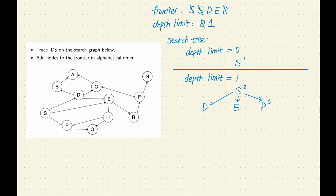The most recent node added to the frontier was E, so E is the fourth node expanded. Remove E from the frontier. E is at the depth limit — we do not generate E's successors. The most recent node added to the frontier was D, so D is the fifth node expanded. Remove D from the frontier. D is at the depth limit, so once again we do not generate its successors. The frontier is empty again. Let's increase the depth limit to 2.